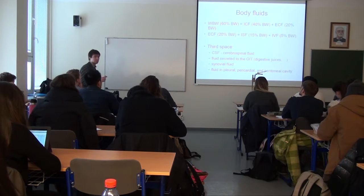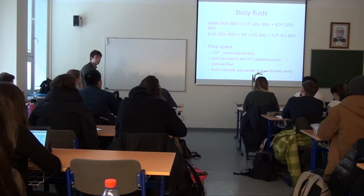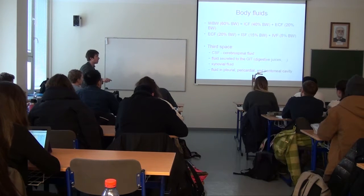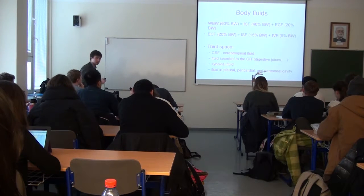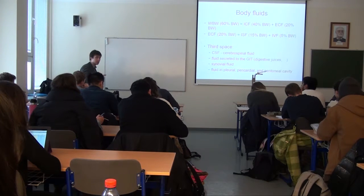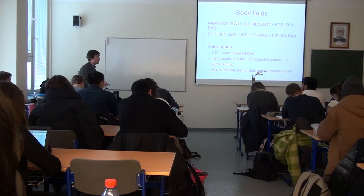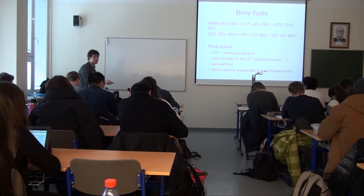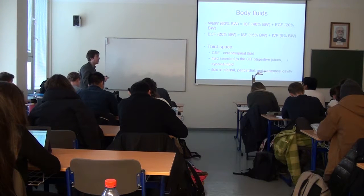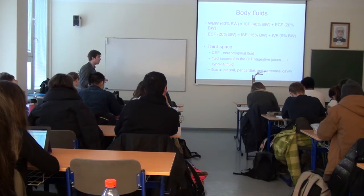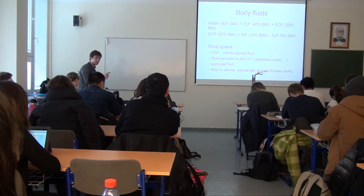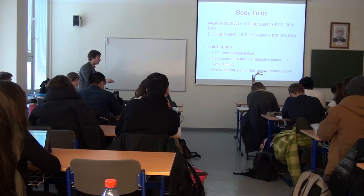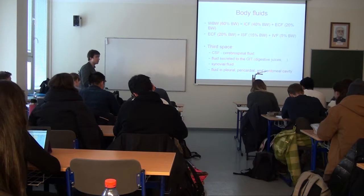What is the third space? We have normal cavities in our body, and in these cavities we have water. One example is cerebrospinal fluid — about 150 mL — in the subarachnoid space surrounding our brain and spinal cord. All fluid in the gastrointestinal tract is also third space — we produce about seven to nine liters of digestive juices per day. Then we have synovial fluid, and fluid in pleural, pericardial, and peritoneal cavities.